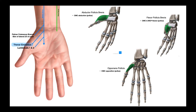The recurrent branch of the median nerve supplies motor branches to the three muscles of the thenar eminence: abductor pollicis brevis, flexor pollicis brevis, and opponens pollicis. Abductor pollicis brevis allows abduction of the thumb at the carpometacarpal joint. Flexor pollicis brevis allows flexion of the thumb at the carpometacarpal and metacarpophalangeal joints. Opponens pollicis allows opposition of the thumb at the carpometacarpal joint.